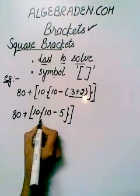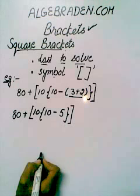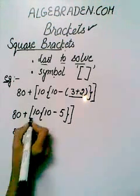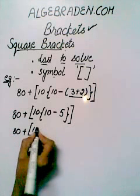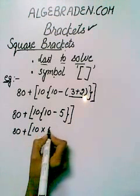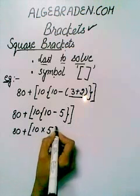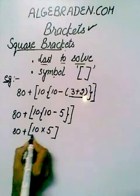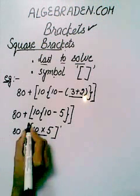Now we will solve the values in the curly brackets. Write 80 plus square bracket start. 10 minus 5 is 5, square bracket close. Now we will solve the values in the square brackets.